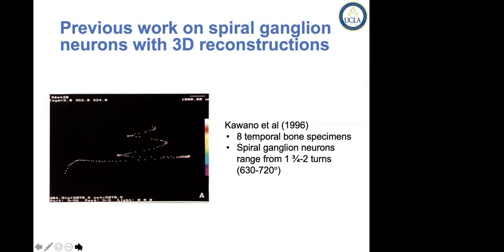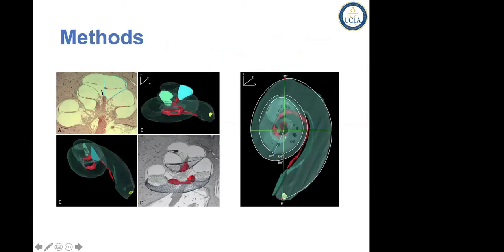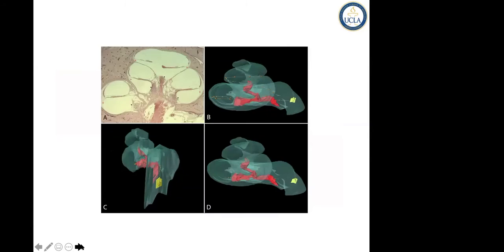So we decided to do a three-dimensional reconstruction study and take measurements directly from the round window. Using software called AMIRA, you create hyperstack sections and take measurements systematically. Using the round window as a point of reference, we looked at exactly how far the spiral ganglion neurons are extending within the cochlea.